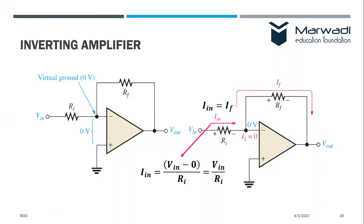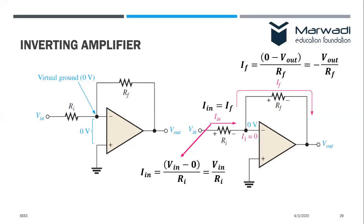How do we determine I_in? I_in equals the potential difference V_in minus zero, divided by Ri. So I_in equals V_in divided by Ri. On the other hand, the feedback current — considering the direction from zero to V_out — is given by zero minus V_out divided by RF. So the feedback current equals minus V_out divided by RF. The negative sign means the actual current flows in the reverse direction.